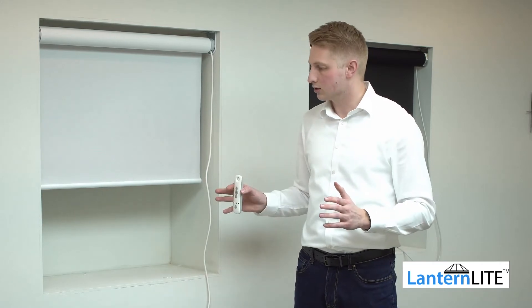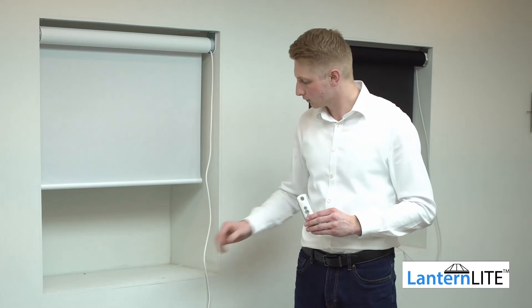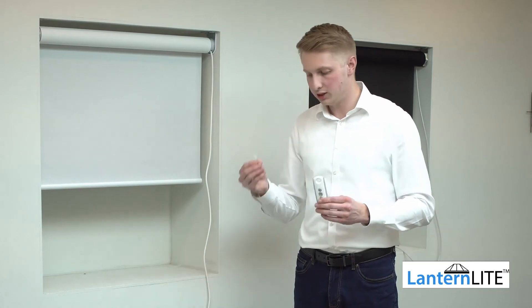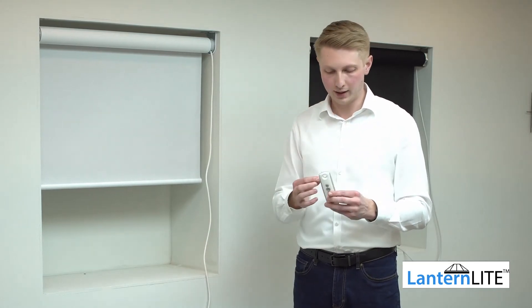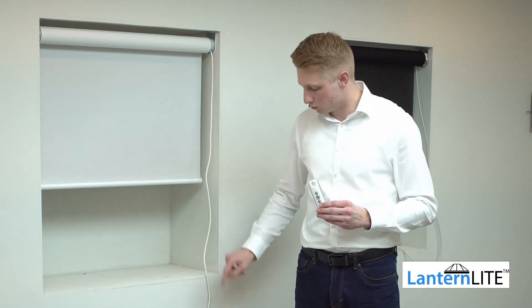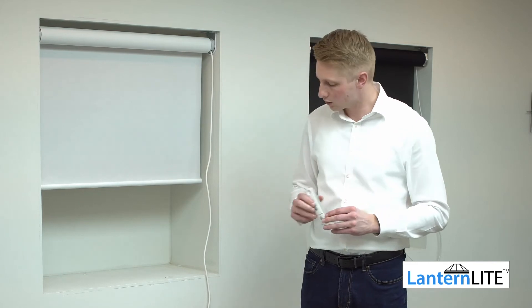So now what happens if you've done all of that and you've made a mistake or you want to change those limits? Or you want to completely wipe the motor and use it perhaps in another blind? For this, you'll need a paper clip or a ballpoint pen. And it's also very handy to be able to turn the power on and off easily and quickly.